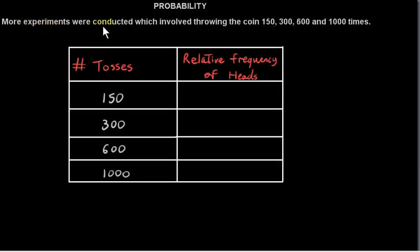Now suppose that more experiments were conducted, which involved throwing the coin 150, 300, 600, and 1,000 times. We're going to look at a simulation of a coin toss experiment and fill out this table and look for a trend in the relative frequency of heads.